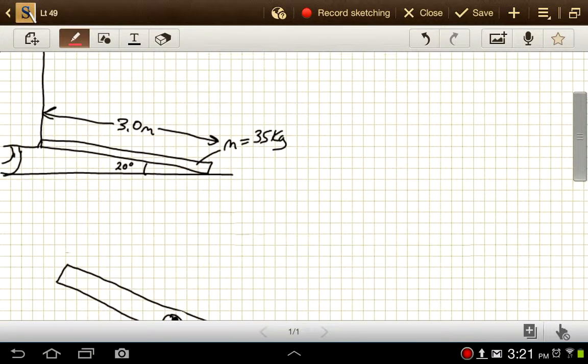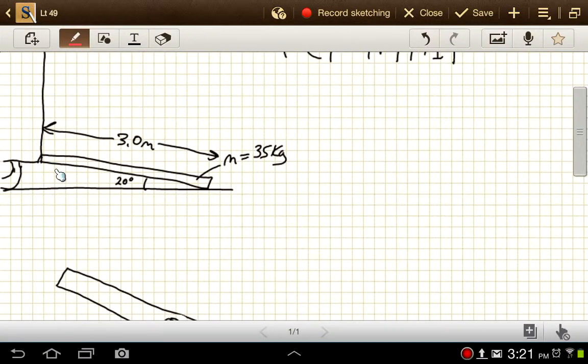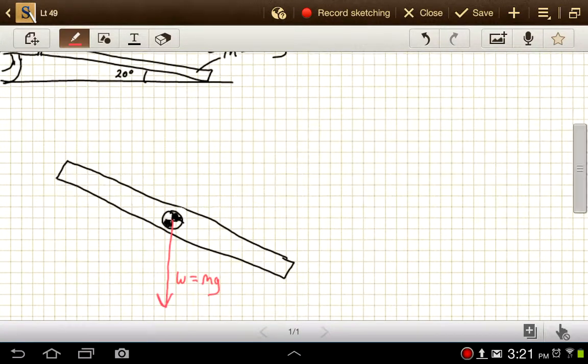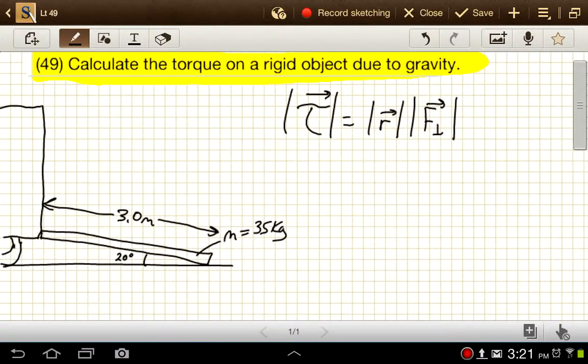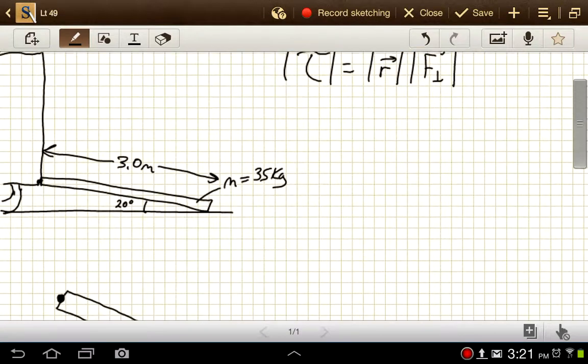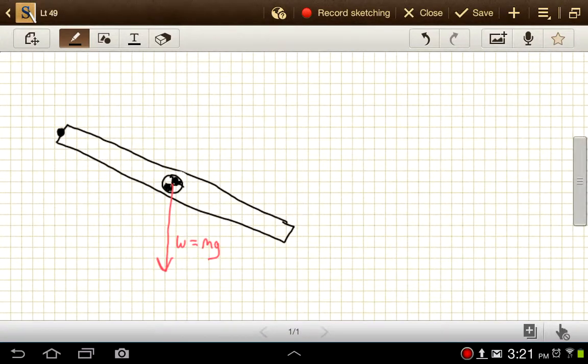And then if we look at the diagram up here, we can see that there's some point right here where that ramp is attached. So we'll use that as our center of rotation. So I suppose I should have been more clear here. I should have stated, what's the torque caused by gravity about this point right here, this connection where the ramp attaches to the truck? Because it would be a different answer if we looked at, say, the point where it touches the ground.